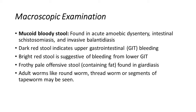By using the color of the stool sample, we can draw conclusions. If the stool sample is dark red in color due to blood, it indicates upper GIT bleeding. If it is bright red, it indicates bleeding from the lower GIT. A pale, fatty stool indicates Giardiasis. In macroscopic examination, we can also identify adult worms like roundworm and threadworm, and sometimes we can see segments of the tapeworm.